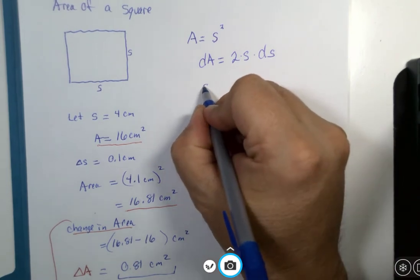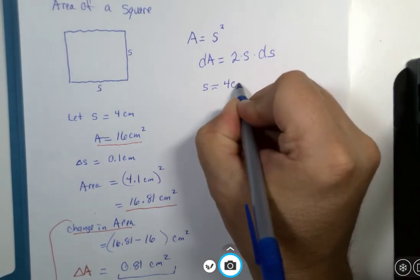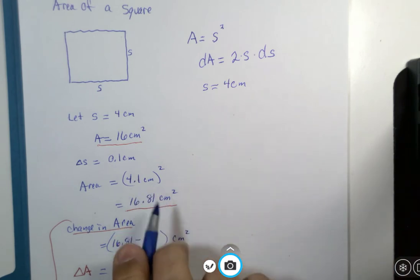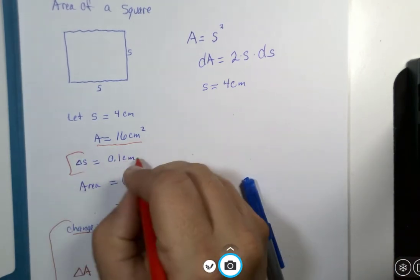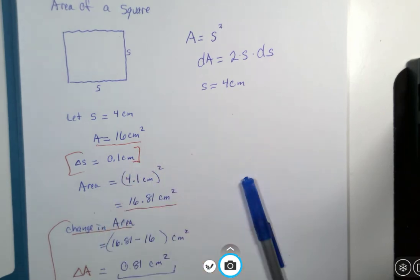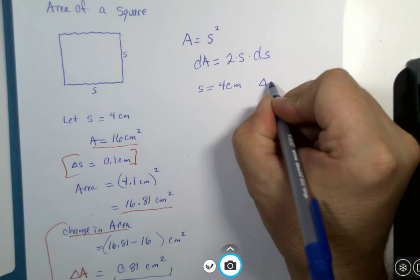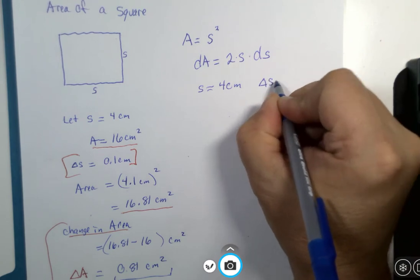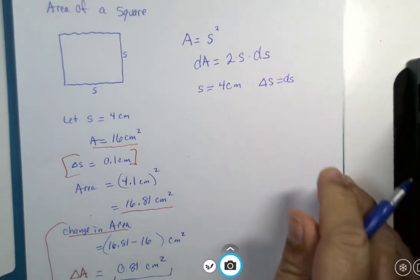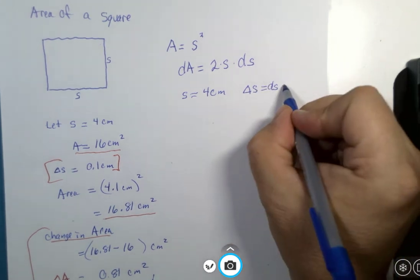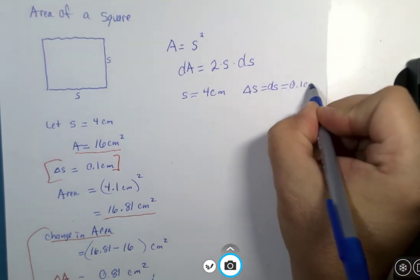Now, we've been given that S is 4 centimeters, and then what we say is that this error in the side, the delta S so to speak, we're going to christen or rename dS, and that is 0.1 centimeters.